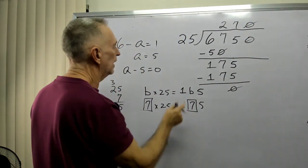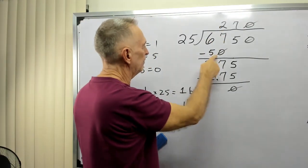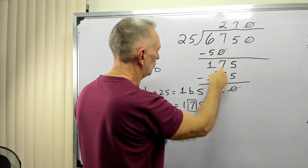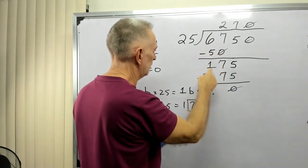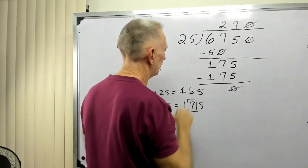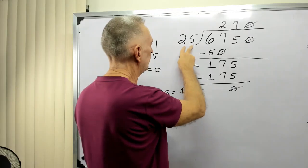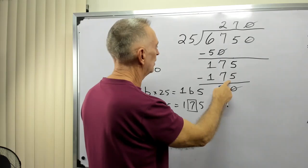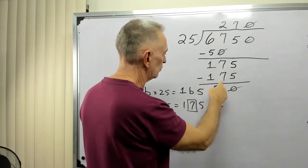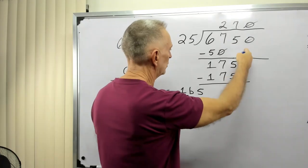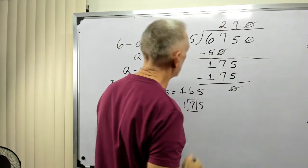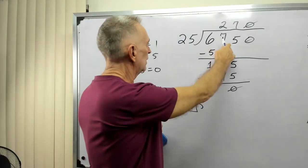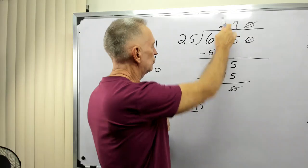And we're going to multiply all of this out and see if it works. Now then, 2 times 25 is 50. 7 minus 0 is 7. 6 minus 5 is 1. Bring down the 5. 7 times 25, we just worked that, was 175. So that's 175. 175 minus 175 is 0. I still have this 0. Carry it to the top. So, 6750 divided by 25 is 270.